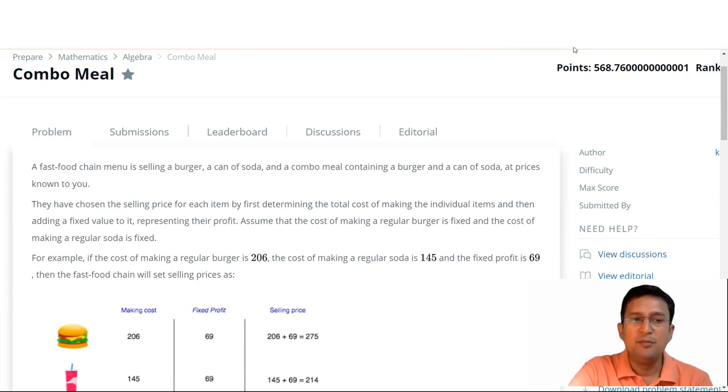A fast food chain menu is selling a burger, a can of soda, and a combo meal containing a burger and a can of soda at prices known to you. They have chosen the selling price of each item by first determining the total cost of making the individual item and then adding a fixed value to it, representing their profit. Assume that the cost of making a regular burger is fixed and the cost of making a regular soda is fixed.